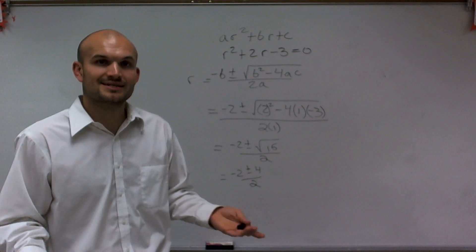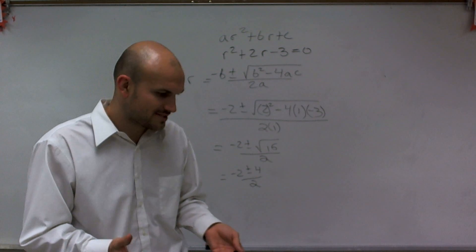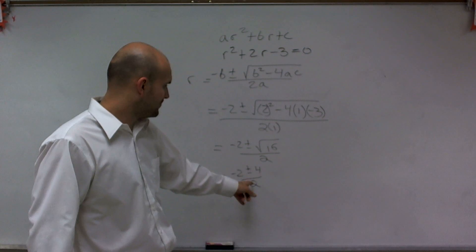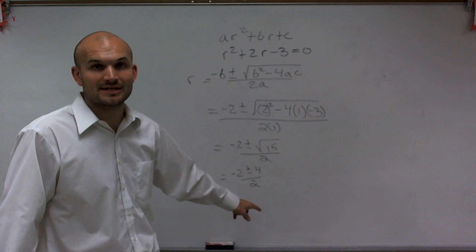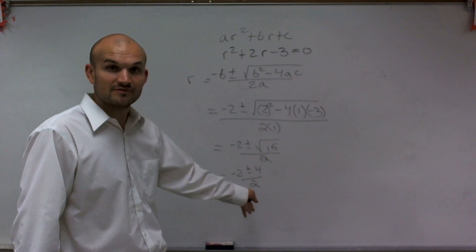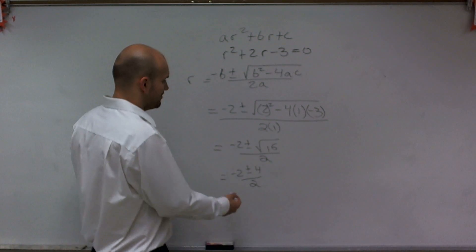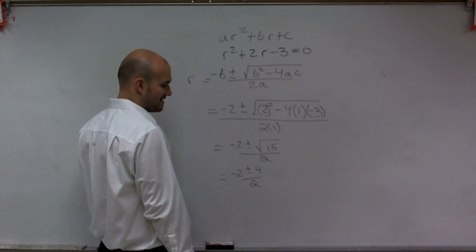So now what I want to do is I'm just going to evaluate this plain and simple. What you can do is you can do this a couple different ways. You can separate, remember, all of this is being divided by 2. So you can first add them and then divide by 2, or then subtract them and divide by 2, or you can divide the 2 into both of those terms and then add and subtract. But I always like to just add on top and then divide by 2.